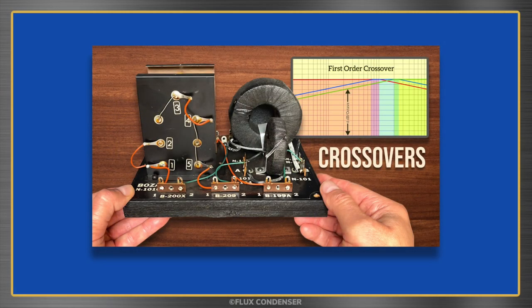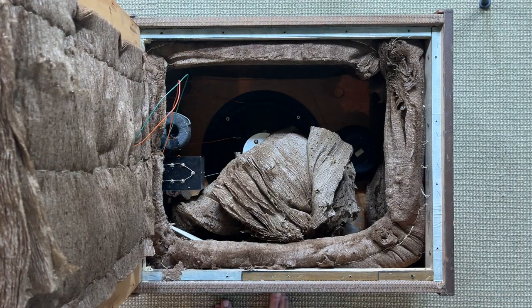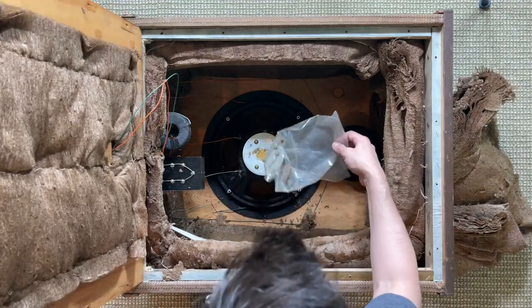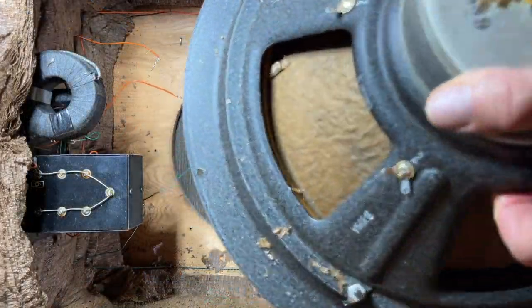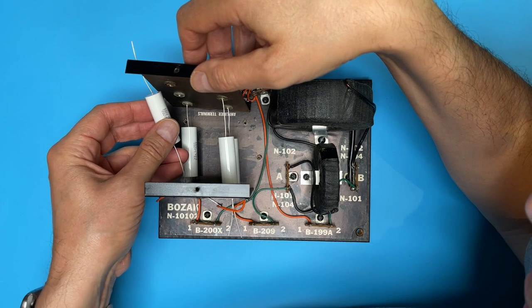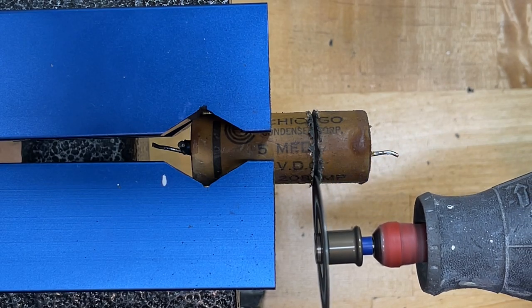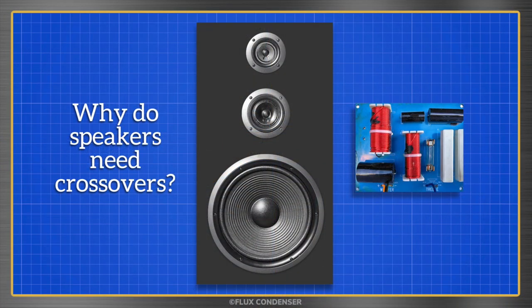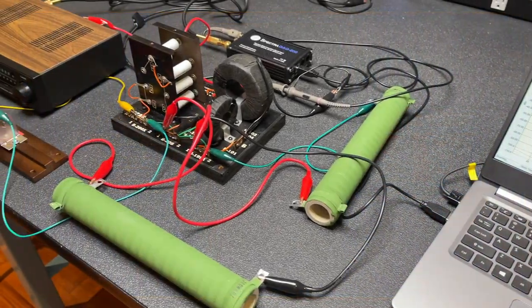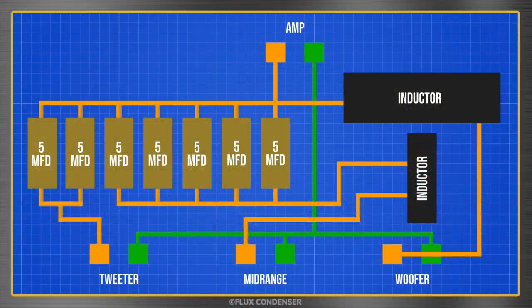Welcome to part 2 of the Bozak B302A series. In the last episode we opened up this 1957 classic, discovered a few surprises, removed the drivers, removed the crossover and tested its capacitors. In this episode I'll replace the bad capacitors and cut the new ones and old ones open for comparison. I'll also explain how crossovers work and test the Bozak's crossover after I restore it and make some wiring changes.